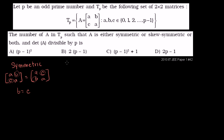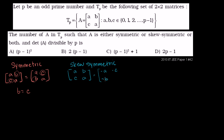Skew-symmetric means a matrix equals the negative of its transpose. So [[a, b], [c, a]] equals negative of its transpose, which gives [[-a, -c], [-b, -a]]. This means a must equal negative a, which means a has to be 0 — the only number that equals its own negative. It also means b must equal negative c.